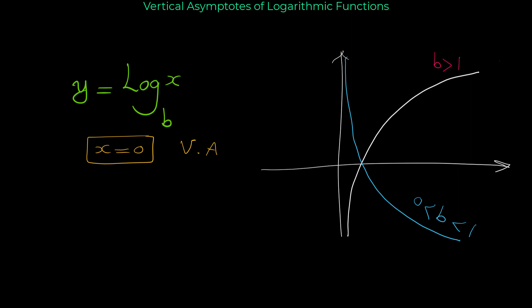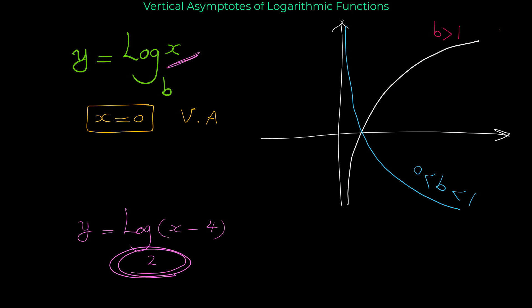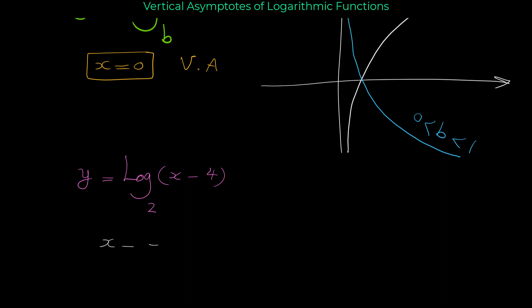Now that we found this general rule for log x in base b, let's use it to find the vertical asymptotes of other logarithmic functions. For example, suppose we want to find the vertical asymptote of log base 2 of (x minus 4). The base doesn't matter. For finding the vertical asymptote, simply set the expression inside the log equal to zero: x minus 4 equals zero, so x equals 4 is the vertical asymptote.